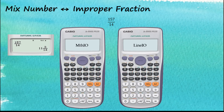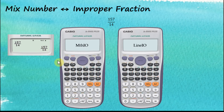Because I already set the answer to display in mixed numbers in the setup menu, the answer appears as a mixed number. I can change this back to an improper fraction by pressing Shift then SD. The answer is then changed to an improper fraction. Pressing Shift SD again changes it back to a mixed number.